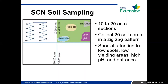For SCN soil sampling, break up your field into 10 to 20 acre sections. Within each section, collect about 20 soil cores in a zigzag pattern — each soil core is about a quarter cup of soil, going down about the top six to eight inches for SCN. Collect all 20 samples into one bucket, mix them together, then take about a pint of that mixture and put it in the sampling bag to send to SDSU for diagnosis.